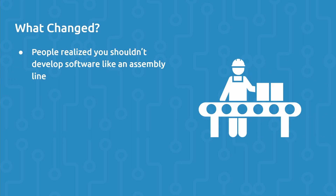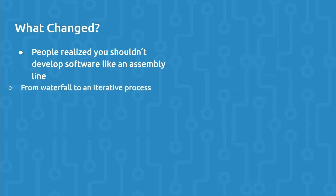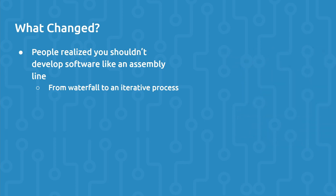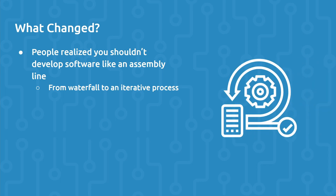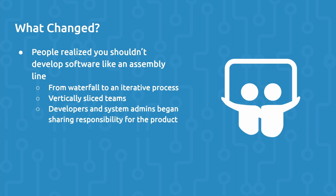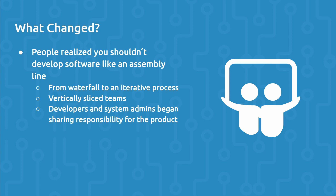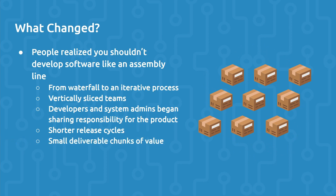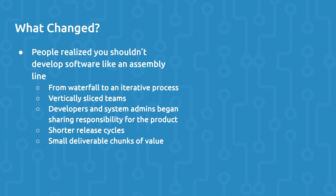People realized you shouldn't develop software like an assembly line. With agile methodology, teams moved from an assembly line process like Waterfall — where a function of the software development process tossed its output to the next function — to a new iterative development process that involved all relevant parties in each step of the software development lifecycle. Vertically sliced agile teams contained all the talent required to develop, build, test, and deploy code. Developers started learning about operations, and operations started learning more about the product, and they shared responsibility for delivery of the software product. Agile methodology shortened release cycles, with a focus on small deliverable chunks of value, rather than large releases that took sometimes six to 12 months to complete.